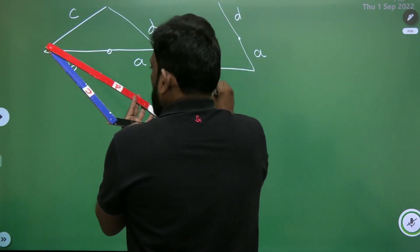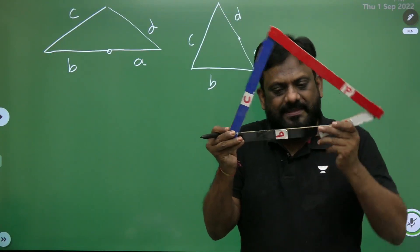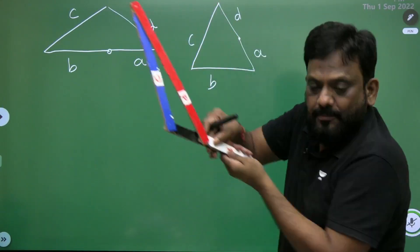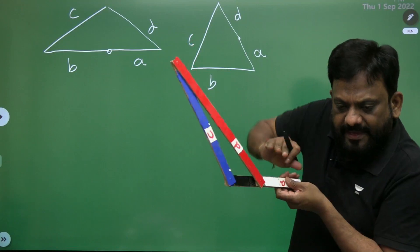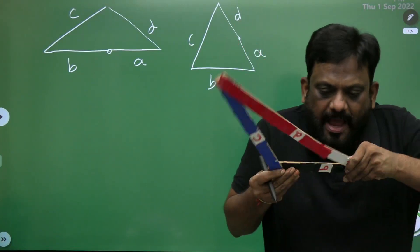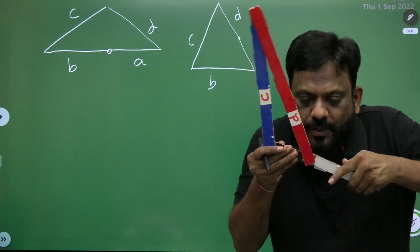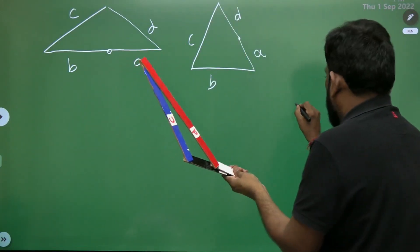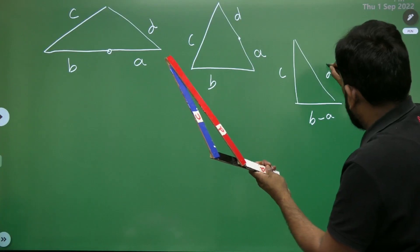Now observe the third position. In this position, links A and B are overlapping. So B is the link and A is the link, and A is on top of B. If this is B and this is A overlapping, the exposed length will be B minus A. So the triangle formed is: B minus A, C, and D.